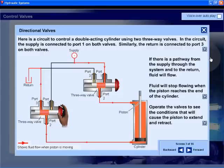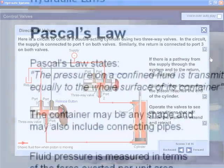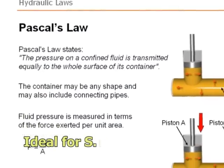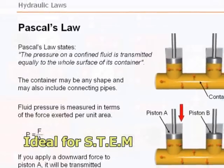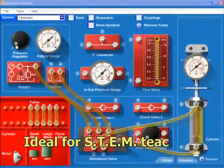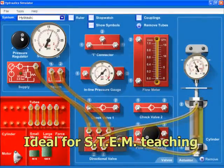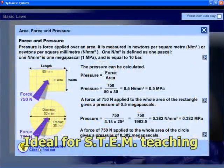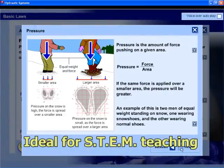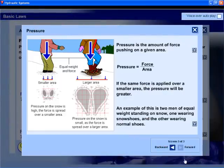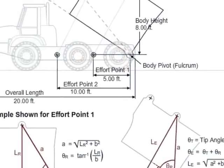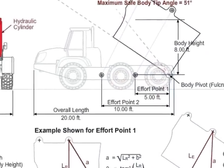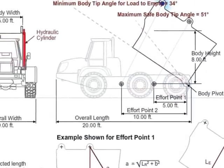Here is a circuit to control a double acting cylinder. Within the activities, students apply various scientific laws and principles. They also perform mathematical calculations in the context of real engineering systems. This approach makes the ST280 ideal for STEM programs.